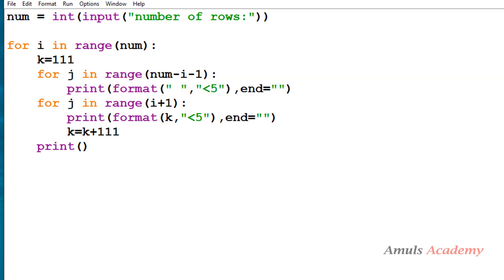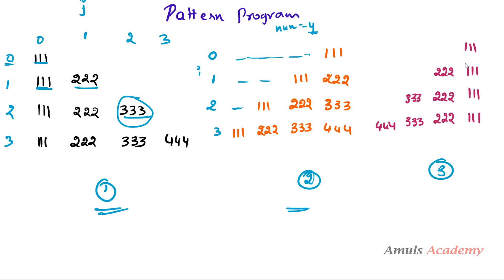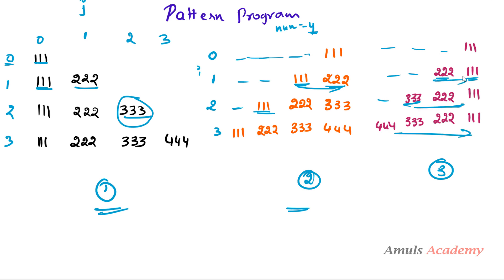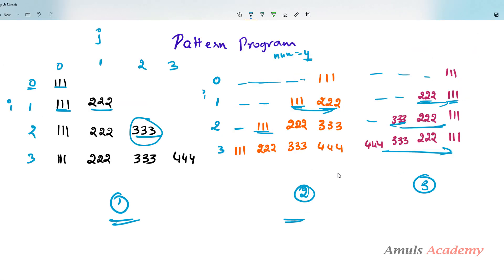Now let's move on to the third pattern. The second and third patterns are somewhat similar — we print spaces then values. But the difference is: in pattern 2 we print 111 first then 222, while in pattern 3 we need 222 first then 111. Pattern 2 is in ascending order; pattern 3 is in descending order.